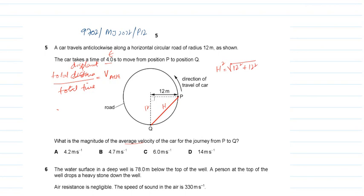So it will be 144 plus 144. This will be 288, and the root of 288 will be 16.97. So H is 16.97, which will be the displacement.